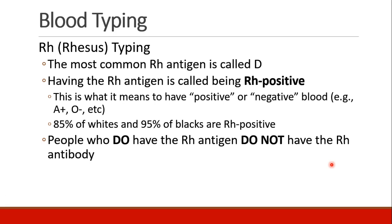The next thing we want to understand is RH, or rhesus typing. The most common RH antigen is called D. The RH antigen is what we call being RH positive. So when we say someone has A positive blood or O negative blood, we're talking about them having the D antigen or not having the D antigen. Most people are RH positive — about 85% of whites and 95% of blacks. People who have the RH antigen don't have the RH antibody, similar to what we discussed before.